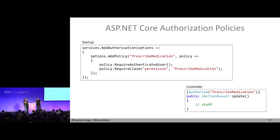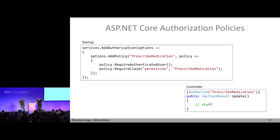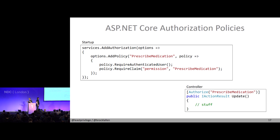The nice thing is you define the policy only in one place — if you change the policy, all the controllers automatically get the new policy. You can even put the policies in a separate assembly and version them independently. This works well with our user mapping from the JSON file, because what I'm requiring from the user is a permission. We leverage our claims transformation to produce the permission, and then the authorize attribute accepts a string — that's now the name of the policy, not a role.